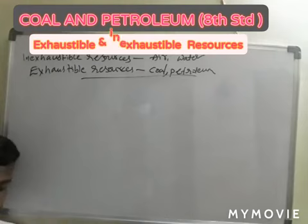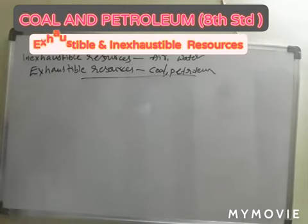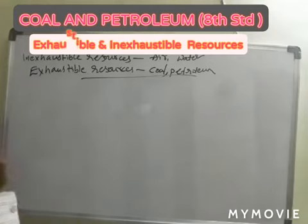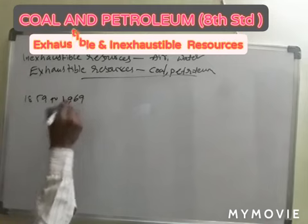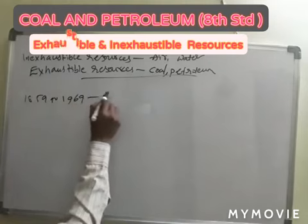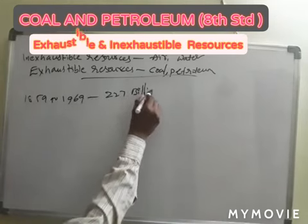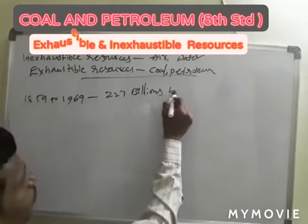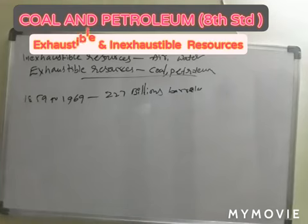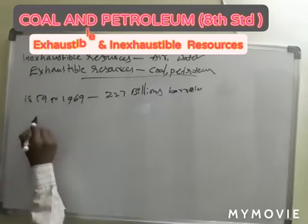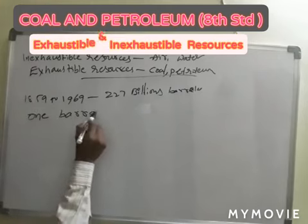Is petroleum an exhaustible resource? If you look at the history of petroleum production from 1859 to 1969, the total production of oil was 227 billion barrels. In the oil industry, the barrel is the standard unit, and one barrel is equal to 159 liters.